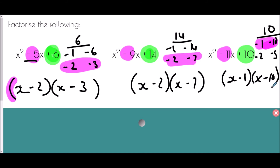To summarize: if you have a positive number at the end and a negative number in the middle, that tells us we're always going to end up with two negatives on the inside of the brackets, because we need to multiply to make a positive number but add to make a negative.